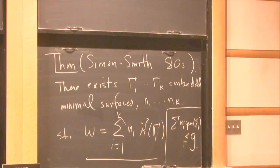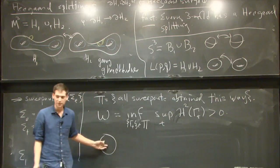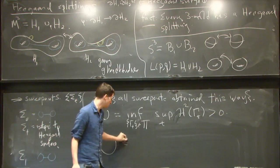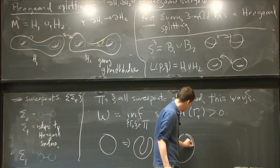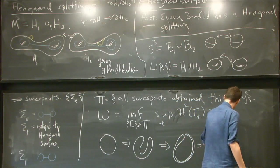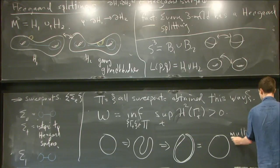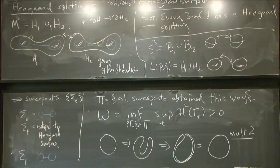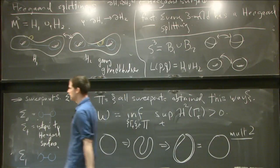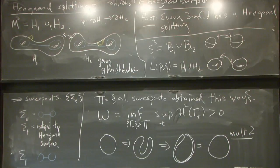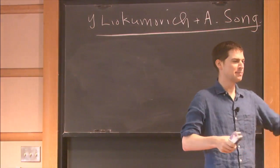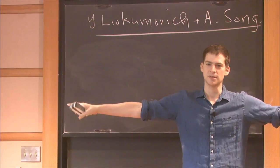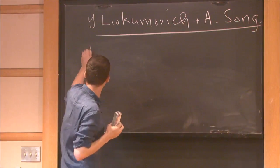If you've never seen multiplicity: you could imagine sweeping out your manifold with two spheres and something weird happens where the surface folds into itself. In the limit you just get a sphere with multiplicity two. So you might ask: when does this not happen? When can I run the min-max procedure and not decompose into smaller pieces?